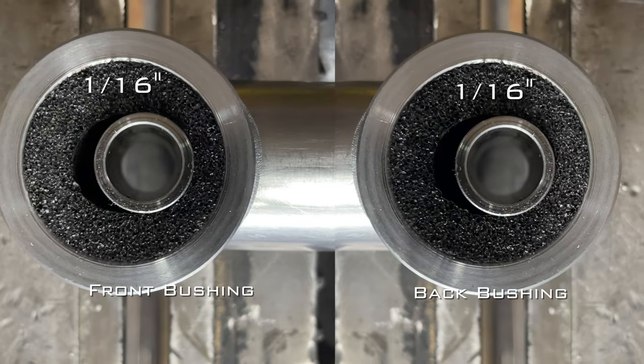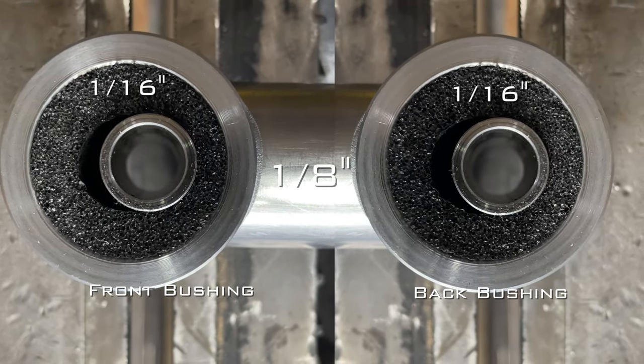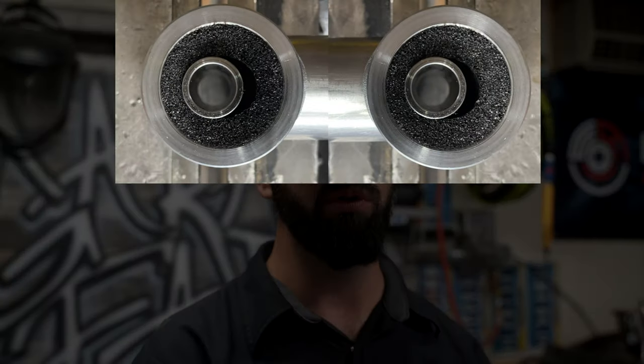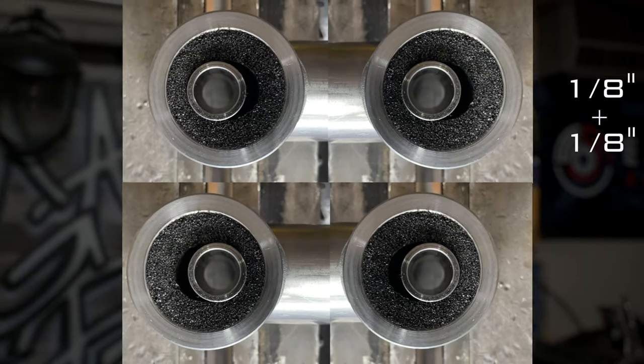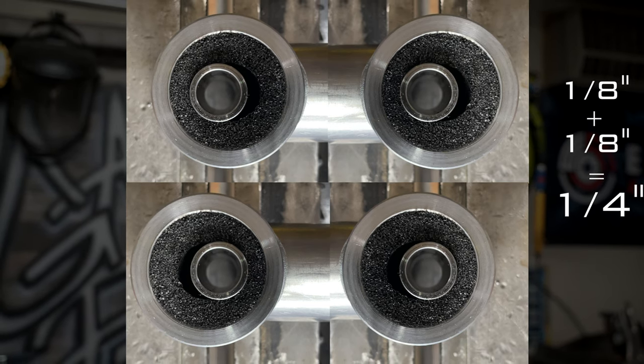Let's say each of the two bushings on each link bar deflects a sixteenth of an inch. That's a total of an eighth-inch movement. Under acceleration, the upper bushings deflect rearward an eighth-inch, and the lowers deflect forward the same. That tiny movement, believe it or not, is changing your pinion angle slightly.